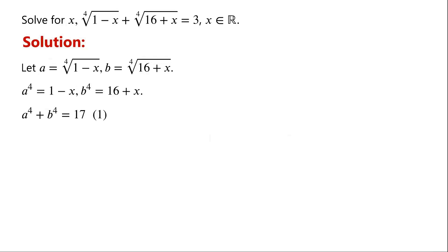From the original equation, we know that a plus b equals 3. We label this as equation 2. Now we have two equations and two variables. For example, from equation 2, b equals 3 minus a. Substituting b into equation 1, we will have a quartic equation in a. Solving a quartic equation might not be an easy task, so we will use a simpler approach to solve for a and b.